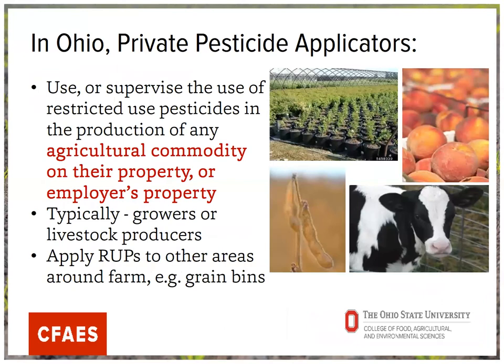Private pesticide applicators — which is of most interest to you ANR educators because you're doing the training for them — are people who use or supervise the use of restricted use pesticides in the production of agricultural commodities, on their own property or their employer's property. This is going to be farmers, greenhouse growers, nursery growers, orchardists, etc. Note that growers are only required to have a license if they're using restricted use products — they don't need a license if they only use general use products — but by and large most grain farmers and greenhouse growers will have some key restricted use products commonly used in their cropping systems.